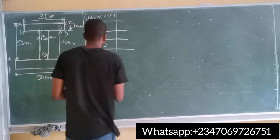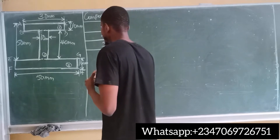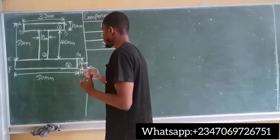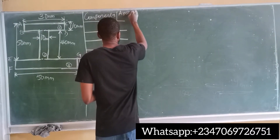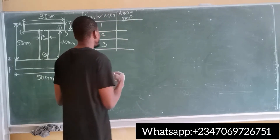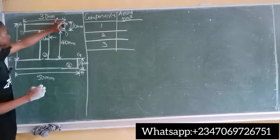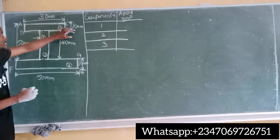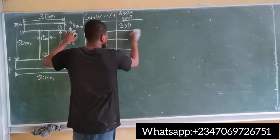After splitting into components, the next step is to find the area of each component. Do not convert distances to meters — keep everything in millimeters. The area of the first component: width is 30 mm and depth is 10 mm, so area equals 30 times 10, which gives 300 mm².